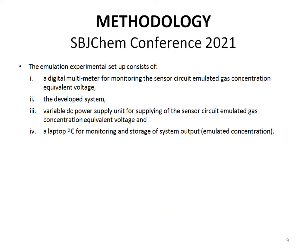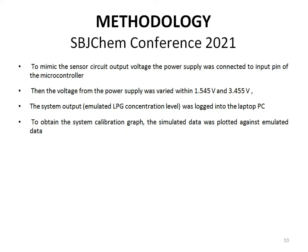The emulation experimental setup consists of a digital multimeter, the developed system, a variable DC power supply unit, and a laptop PC for monitoring and storage of system output. In order to mimic the sensor circuit output voltage, the power supply was connected to the input panel of the microcontroller. The voltage from the power supply was varied within 1.545 volts and 3.455 volts, and the system output was logged into the laptop PC. The system calibration graph was obtained by plotting the simulated data against the emulated data.